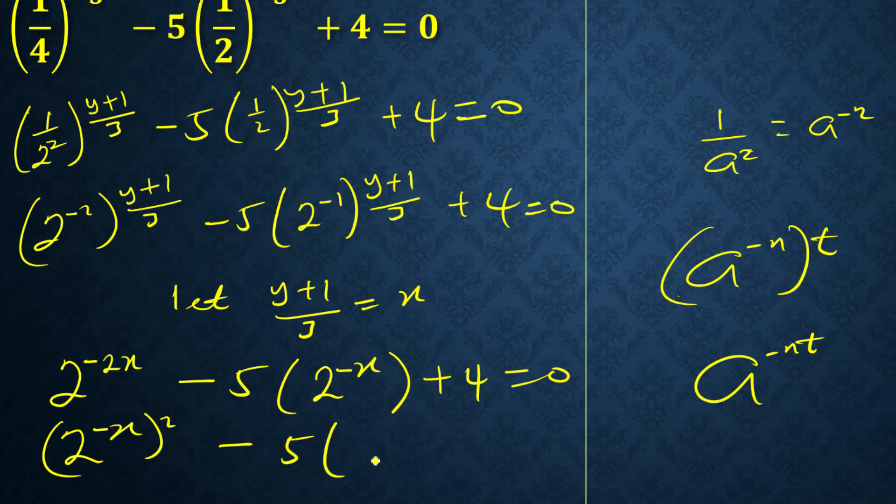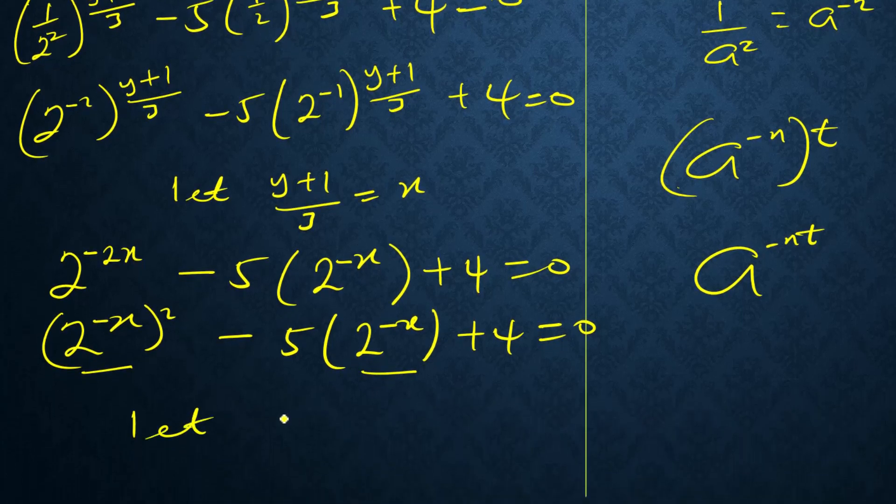Plus 4 equals zero. I can see 2 here, so this one can be written as 2 raised to minus x to the power 2. We have 2 with minus x and this one, so we have to represent 2 raised to minus x.